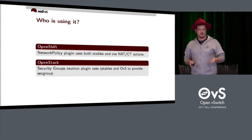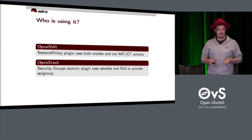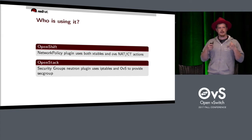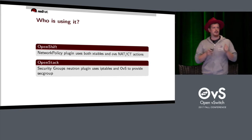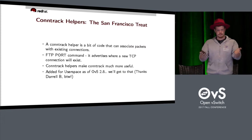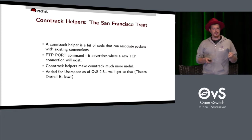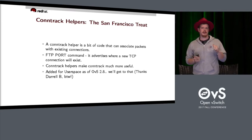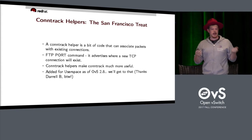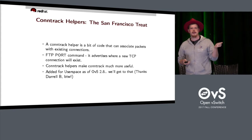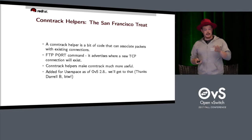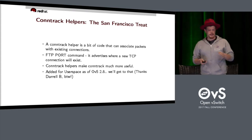Who cares about conntrack? OpenShift cares — that's their network policy plug-in. OpenStack cares — security groups are implemented using conntrack. It's how we allow traffic we want and block malicious traffic. Conntrack helpers are bits of code that tell us a new connection is going to be coming — they set up expectations and make conntrack more useful. In user space, we have helpers added as part of OVS 2.8.